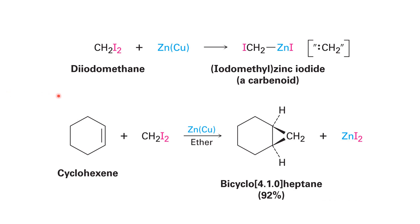Chloroform is a convenient reagent — by simply reacting with a strong base it can form carbene — but the product contains two chlorine atoms, so sometimes we don't want that. If you start with diiodomethane and react with zinc, it forms an intermediate that rearranges to generate a simple CH2 carbene. This CH2 carbene can react with an alkene, and the end product is cyclopropane without any chlorine atoms. This convenient reaction is named the Simmons-Smith reaction.